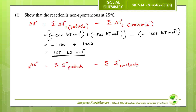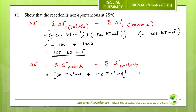Next, the standard entropy change of the reaction equals the sum of standard entropies of products minus the sum for reactants. The standard entropy of product C is 50 J/K/mol, of product D is 170 J/K/mol, and of reactant AB is 100 J/K/mol. This gives 220 minus 100, so the standard entropy change of this reaction is 120 J/K/mol.